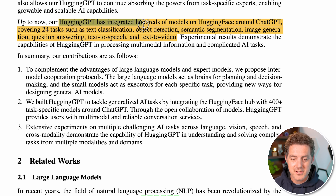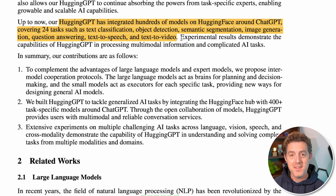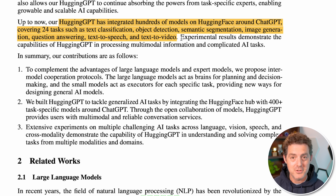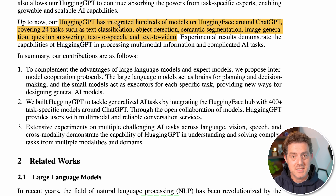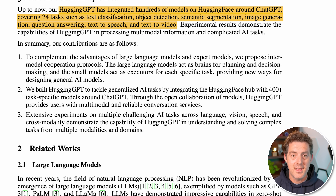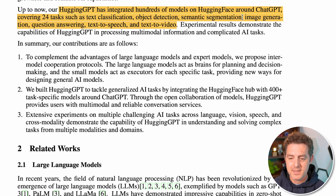HuggingGPT has integrated hundreds of models on Hugging Face, and they've already integrated hundreds, which is really cool. They've integrated it all around ChatGPT, and ChatGPT from OpenAI is still that central brain — the dispatch, the orchestrator. It covers 24 tasks such as text classification, object detection, semantic segmentation, image generation, question answering, text-to-speech, and text-to-video.